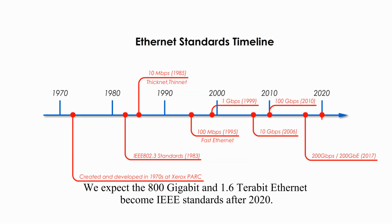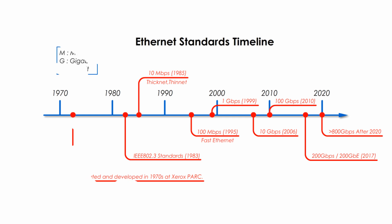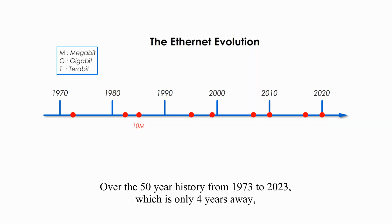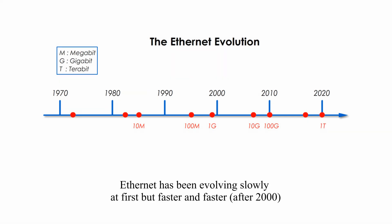We expect 800 gigabit and 1.6 terabit Ethernet to become IEEE standards after 2020. Over the 50-year history from 1973 to 2023, Ethernet has been evolving slowly at first, but faster and faster.